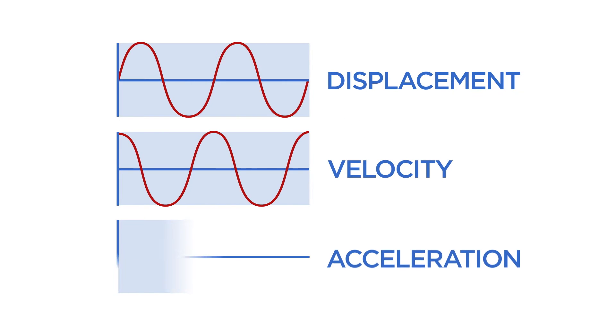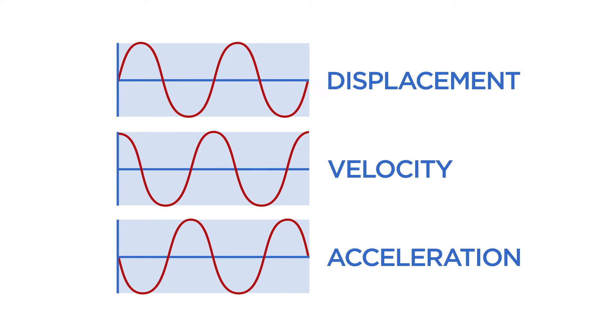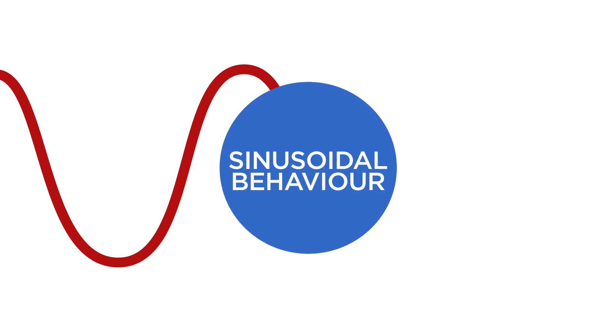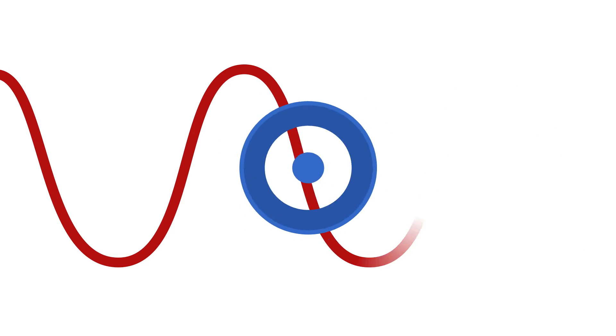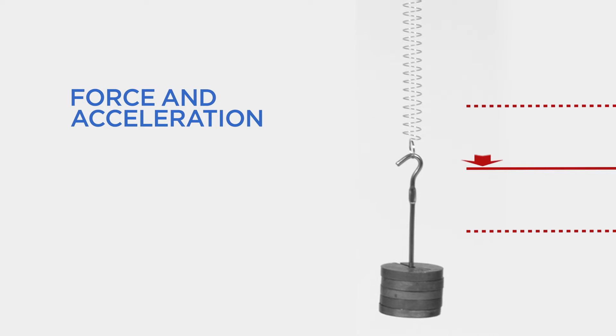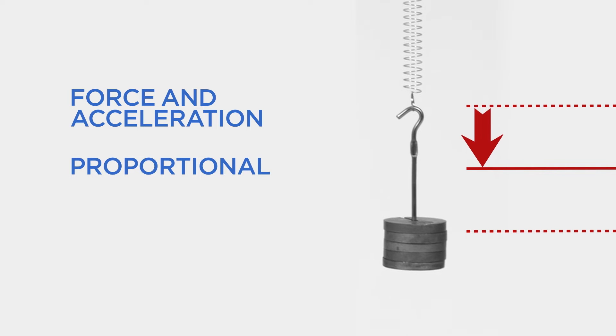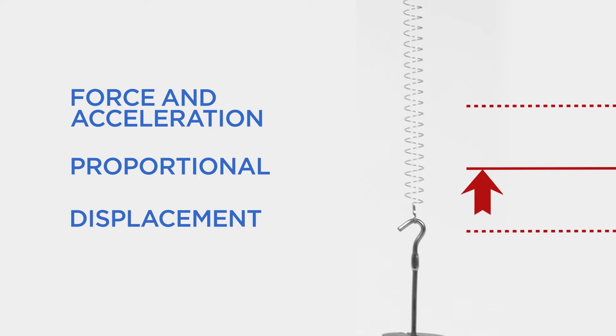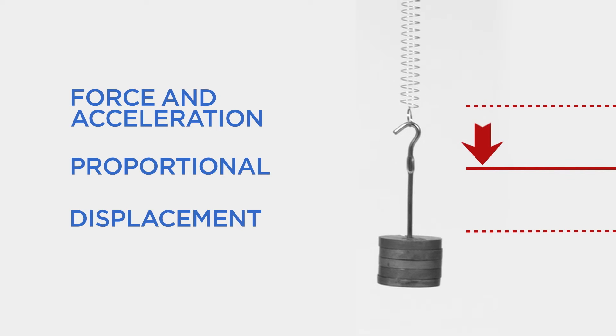During a single oscillation, there is a constant interchange between potential and kinetic energy. The displacement, velocity and acceleration experienced by the mass during a single cycle all show sinusoidal behaviour. And the resultant force acting on the mass, and therefore its acceleration, is proportional to the displacement of the mass from its equilibrium position, and directed towards that point at all times.